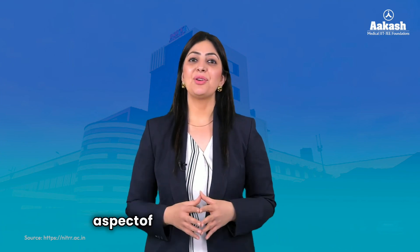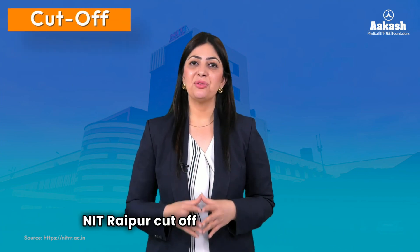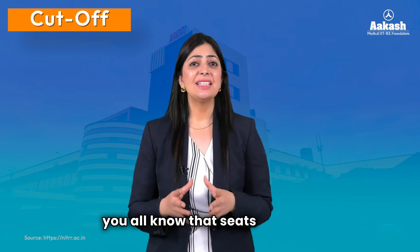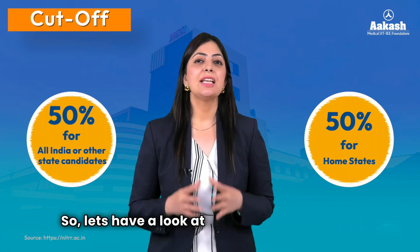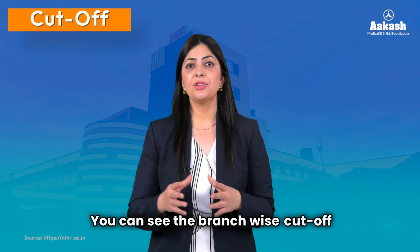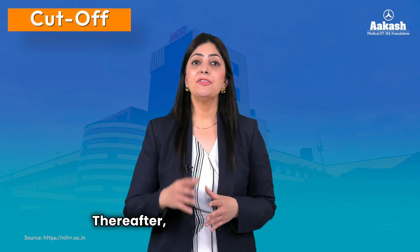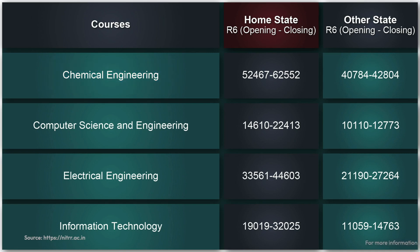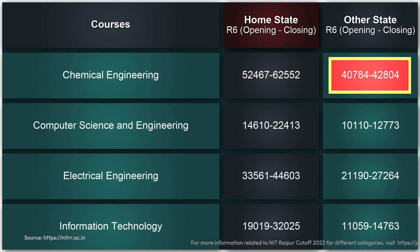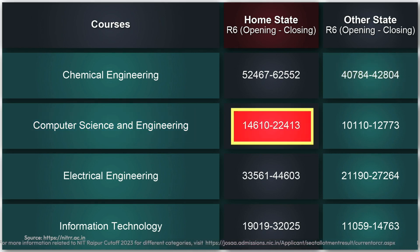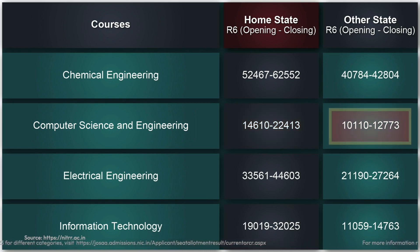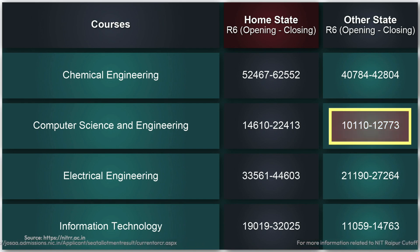Now let's look at NIT Raipur cutoffs for 2023. Seats at all NITs are reserved 50% for home state candidates and 50% for other state candidates. For the Chemical Engineering branch, the closing rank for home state candidates was 62,552 and for other state candidates it was 42,804. For Computer Science and Engineering, the closing rank for home state candidates was 22,413 and for other state candidates it was 12,773.